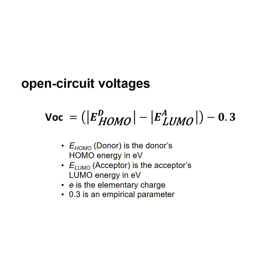Open circuit voltage. E_HOMO is the donor's HOMO energy in electron volts. E_LUMO is the acceptor's LUMO energy in electron volts. E is the elementary charge. 0.3 is an empirical parameter.